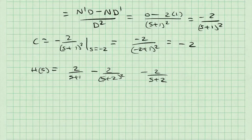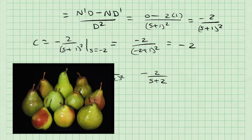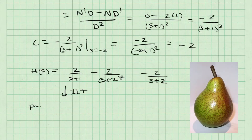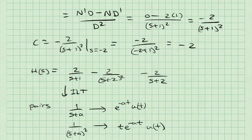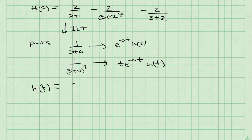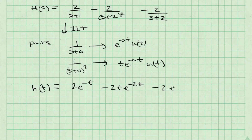I'm going to use the following pairs to take the inverse Laplace transform. The same pair as before: 1 over S plus A transforms to E to the negative A·T·U(T). I'm also going to use the pair 1 over (S plus A) squared transforms to T·E to the negative A·T·U(T). Therefore h(T) equals 2·E to the minus T, minus 2T·E to the minus 2T, minus 2·E to the minus 2T, all multiplied by U(T).